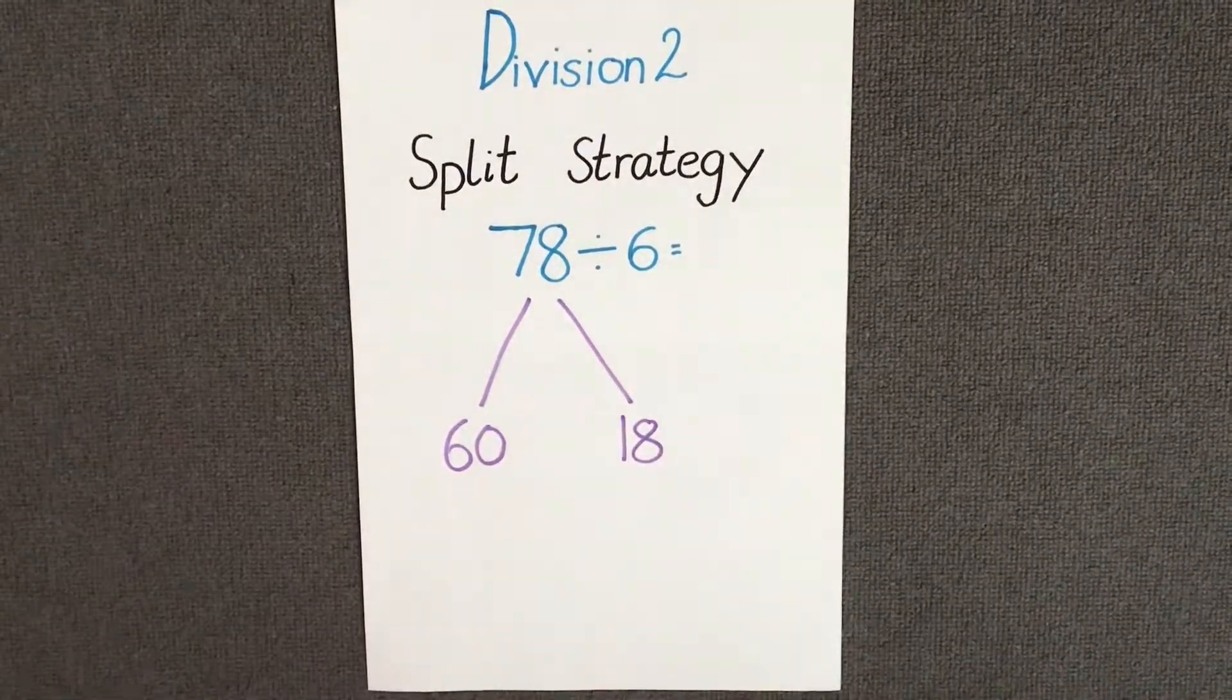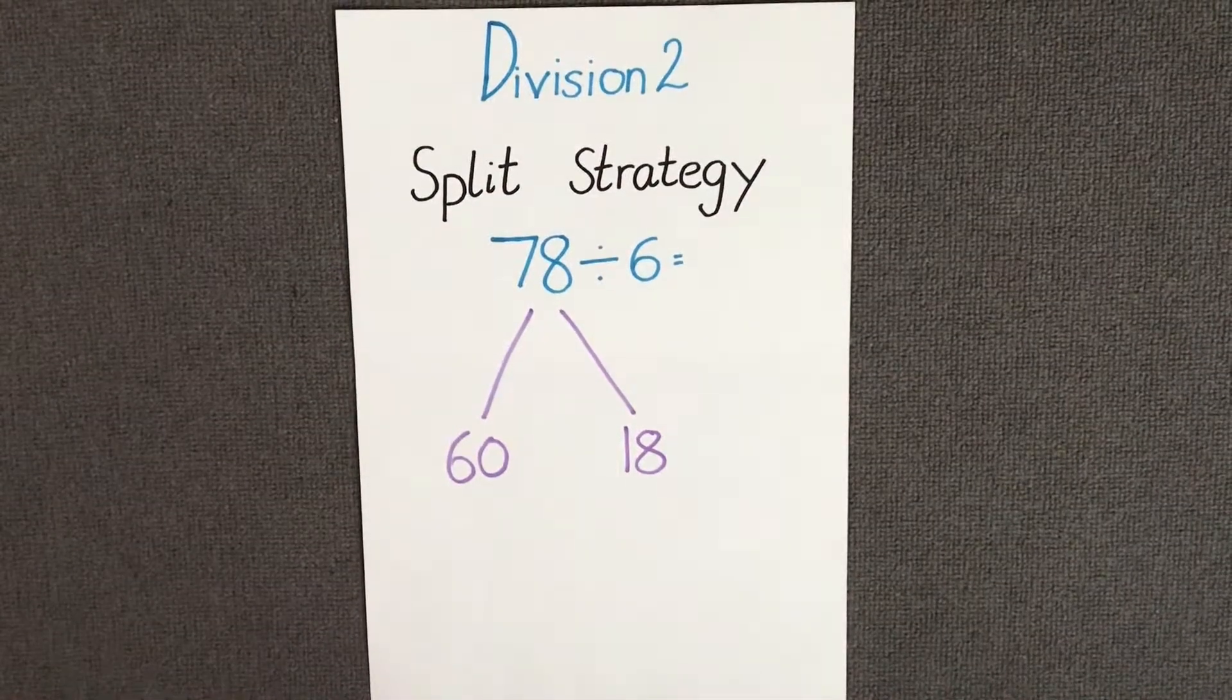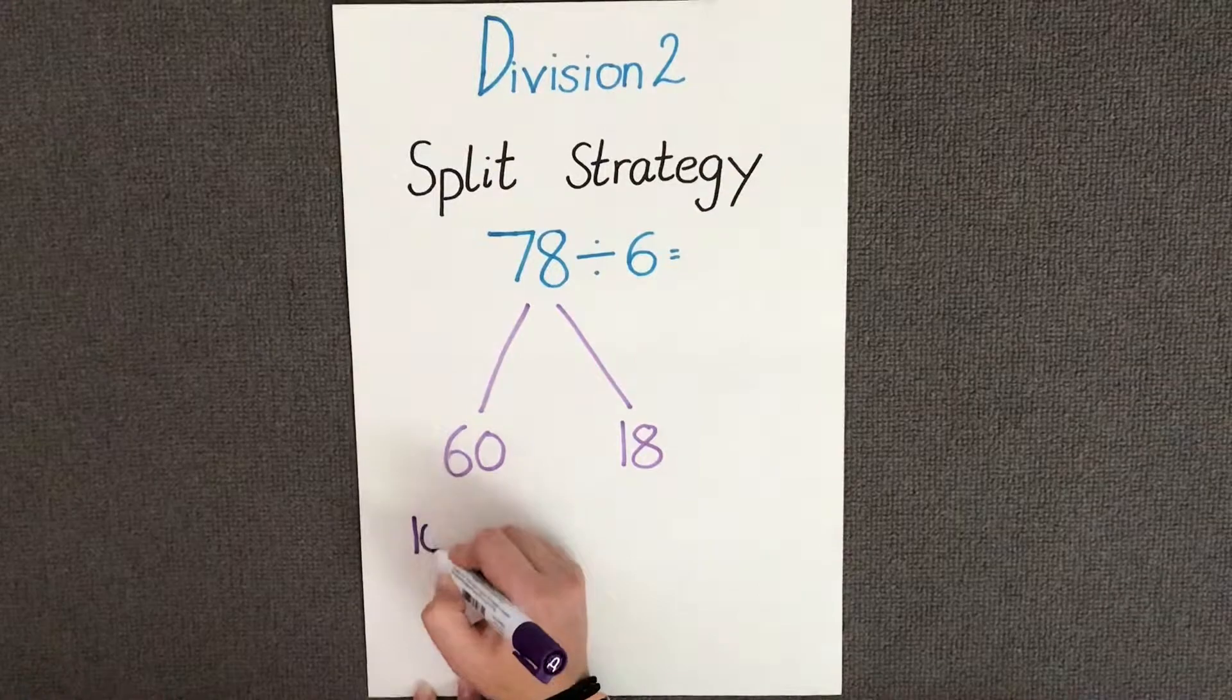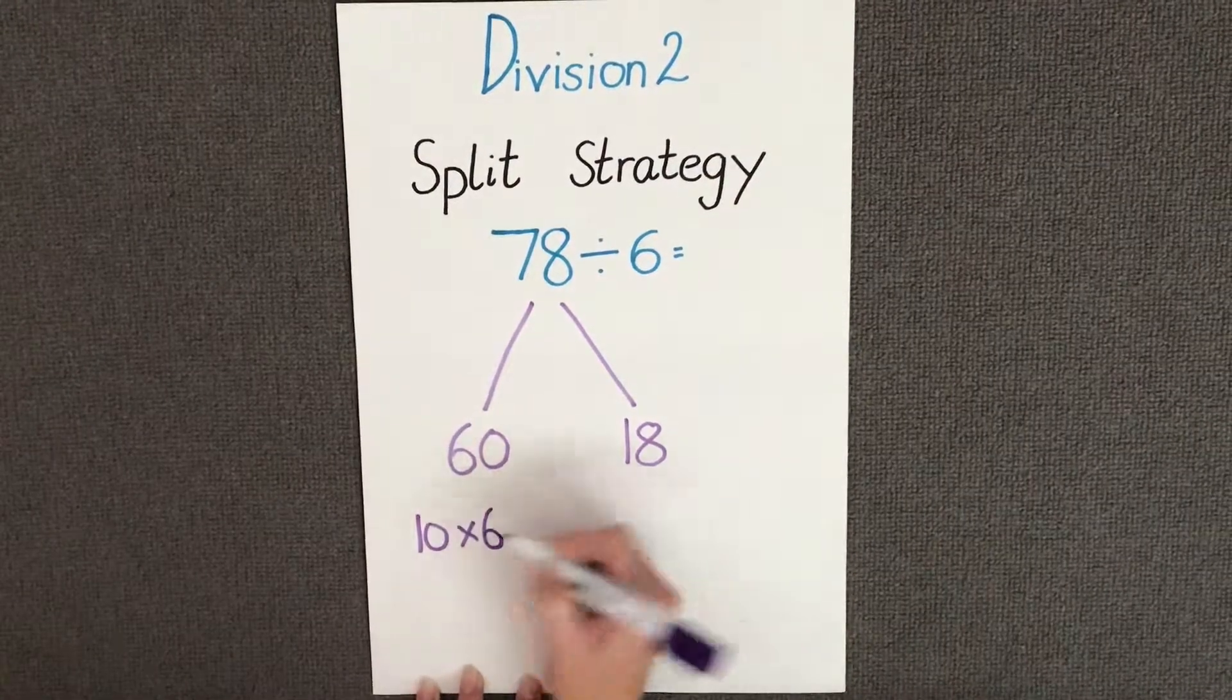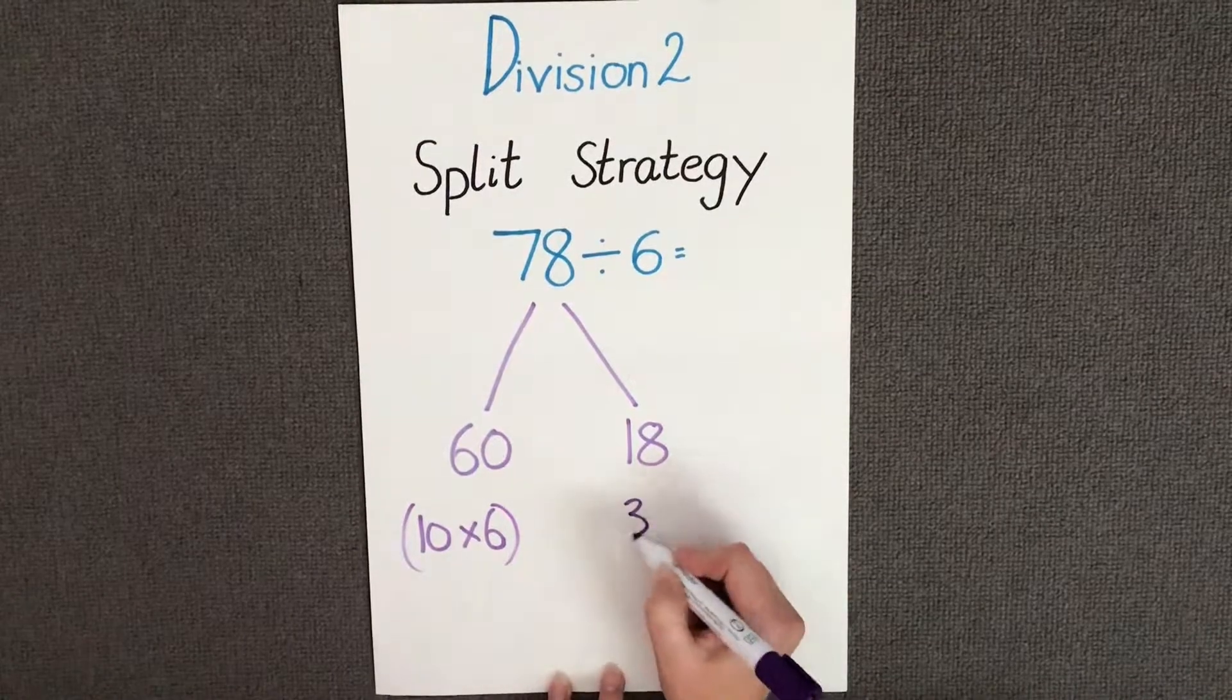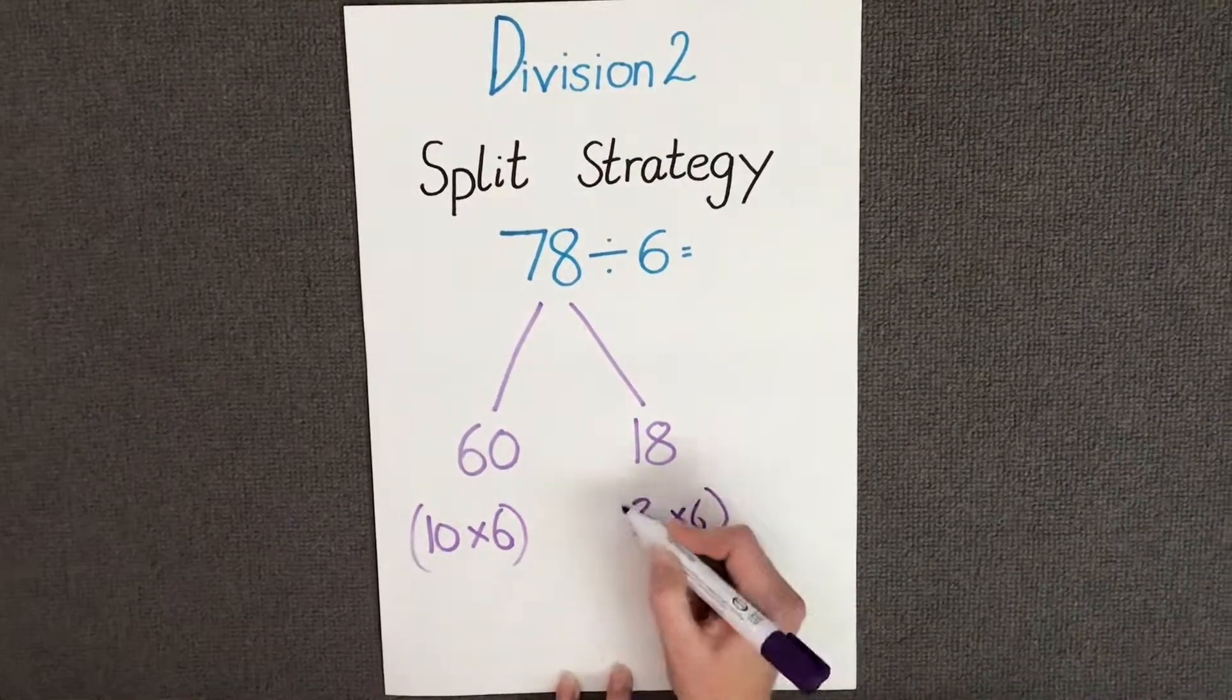Now let's use our understanding of our multiplication facts to help us. We know that 10 times 6 equals 60 and we know that 3 times 6 equals 18.